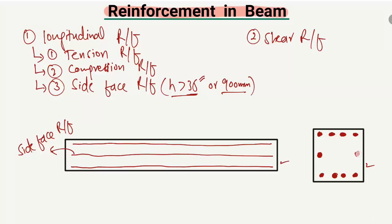In the cross-section, side face reinforcement appears at the center of the beam. So to summarize the longitudinal reinforcement, we have three types: tension reinforcement at the bottom, compression reinforcement at the top, and side face reinforcement at the center of the beam.